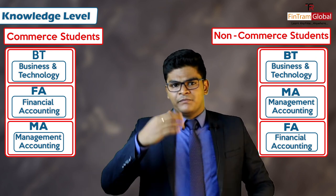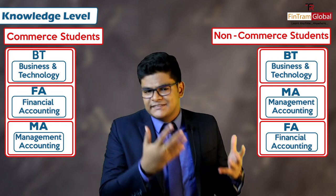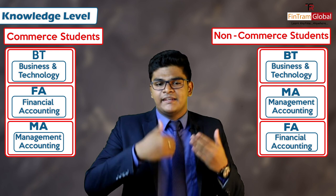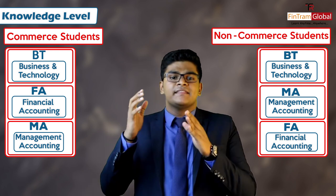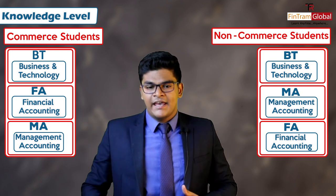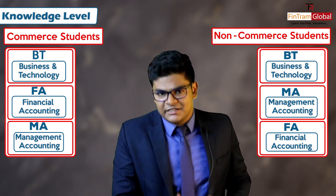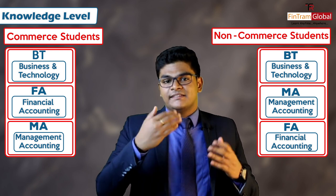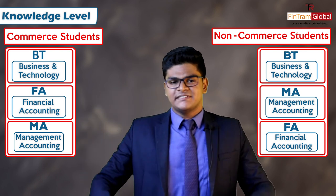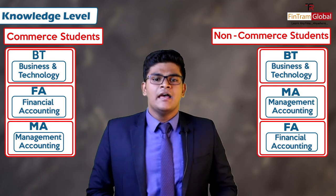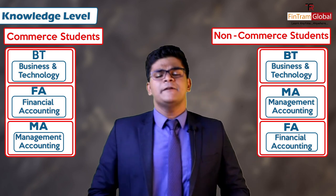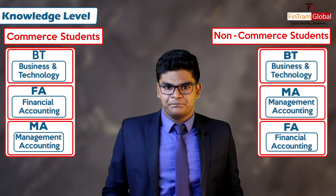So the order for the first category — commerce students — is BT, then FA, then MA. For non-commerce students, it's going to be BT, MA, and then FA. The key concept behind recommending these pathways is just to increase your motivation by attempting the easier paper first. That's the pathway I recommend for the knowledge level.